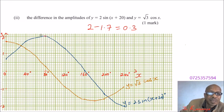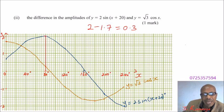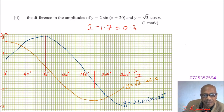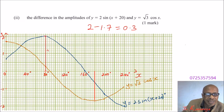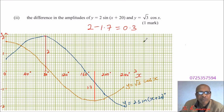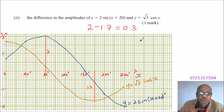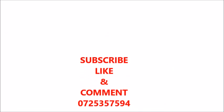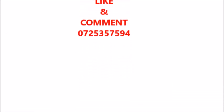The difference in amplitude is 0.3, giving you 1 mark. It is a very easy question if you follow the process correctly — you should be able to score 10 marks. That's how you do this question.